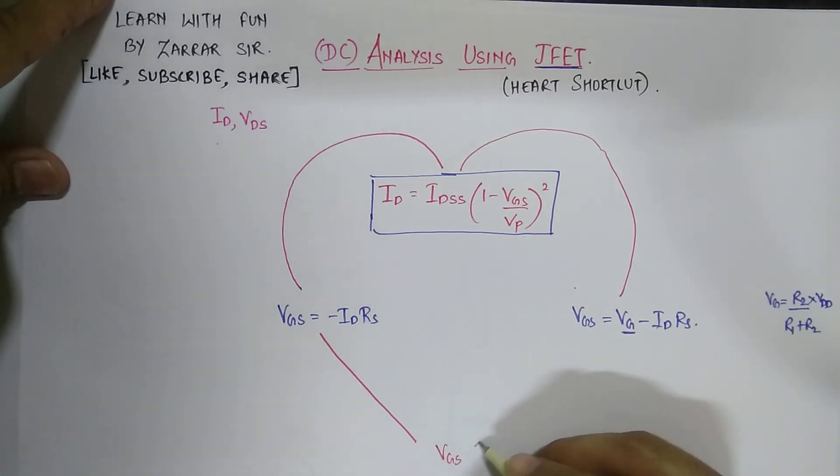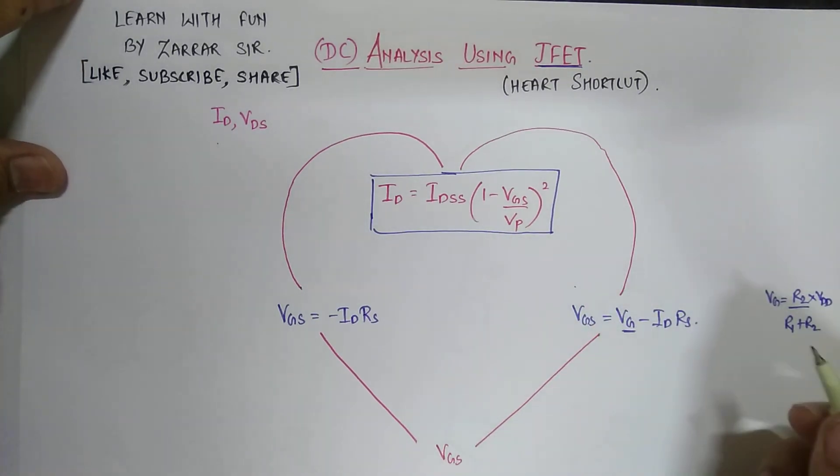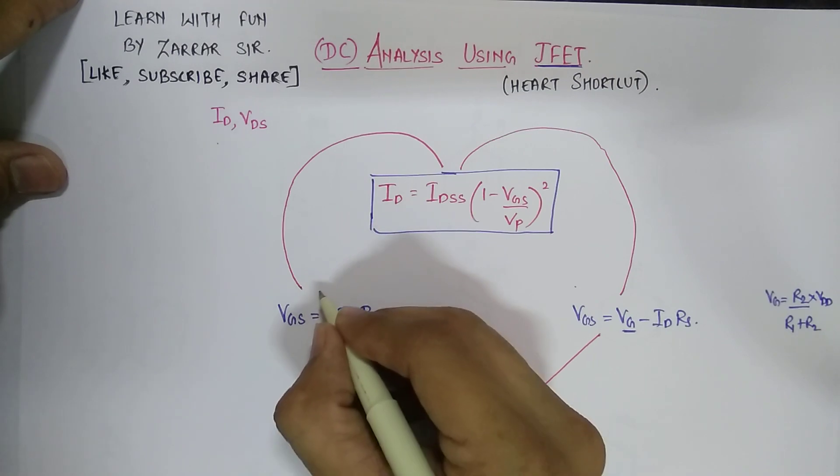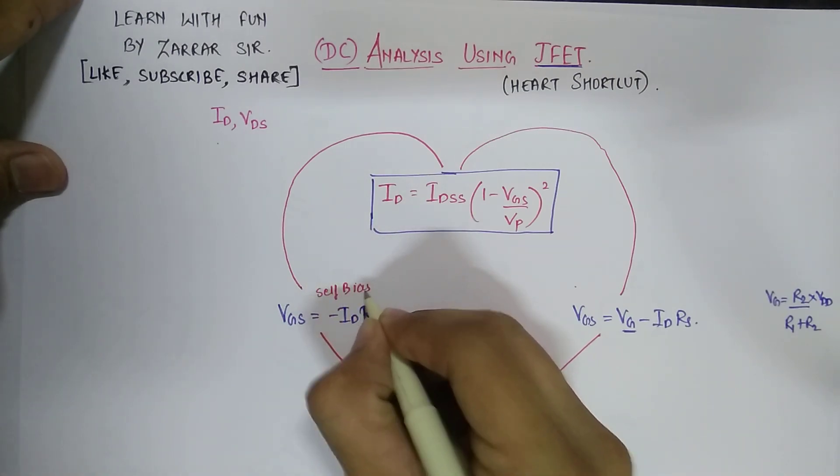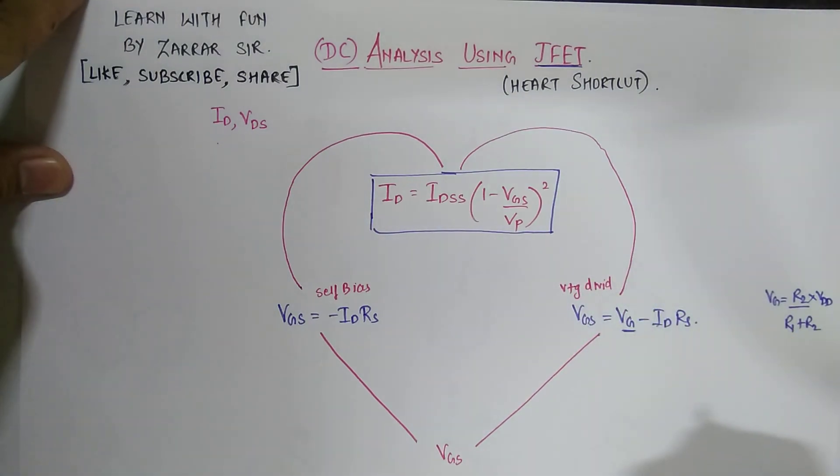So either you follow this method or you can follow another method. Do remember this is self bias and this one is voltage divider bias. That's it. Thank you everyone, please like and subscribe my channel Learn With Fun.